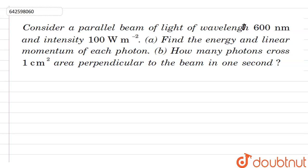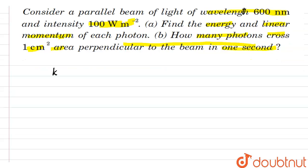In this question we have to consider a parallel beam of light of wavelength 600 nanometer and intensity 100 watt per meter square. We have to calculate the energy and linear momentum of each photon, and also calculate how many photons cross one centimeter square area perpendicular to the beam in one second.